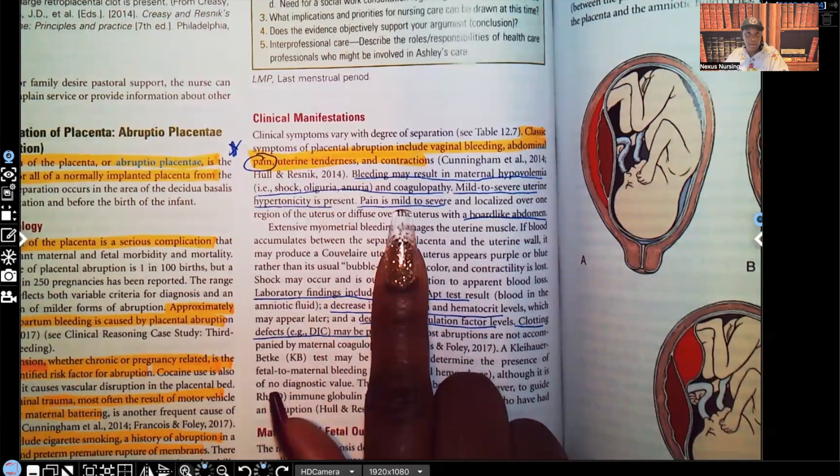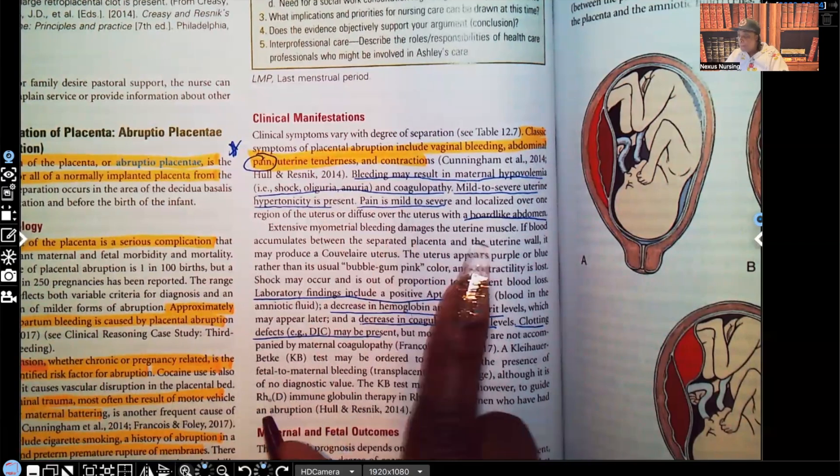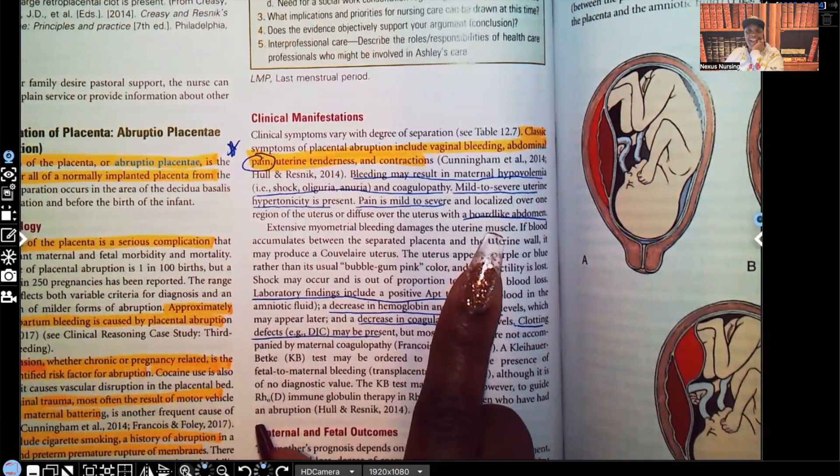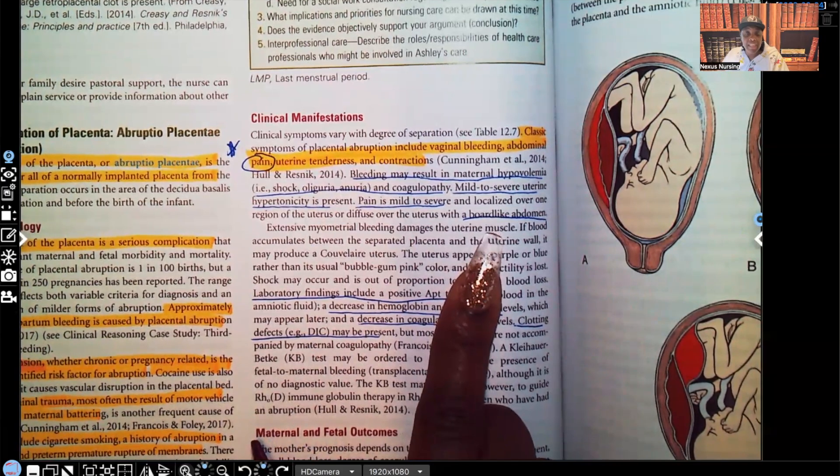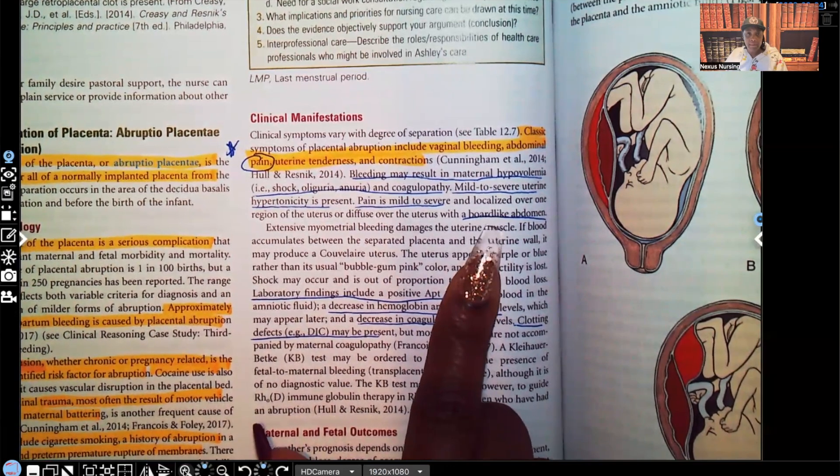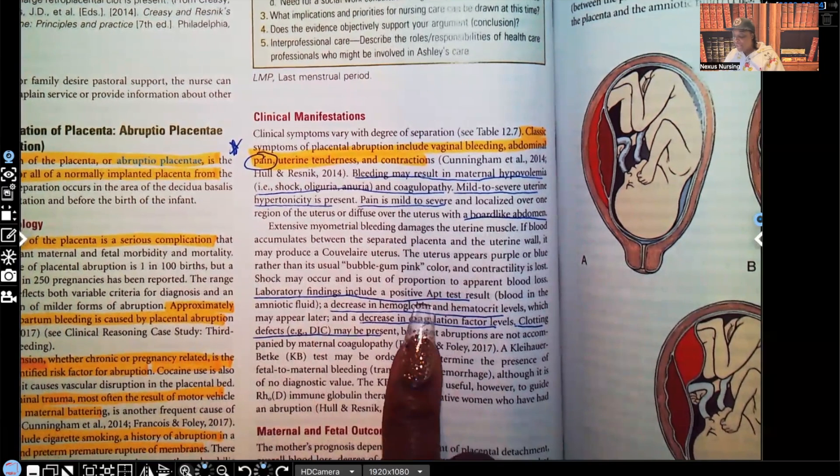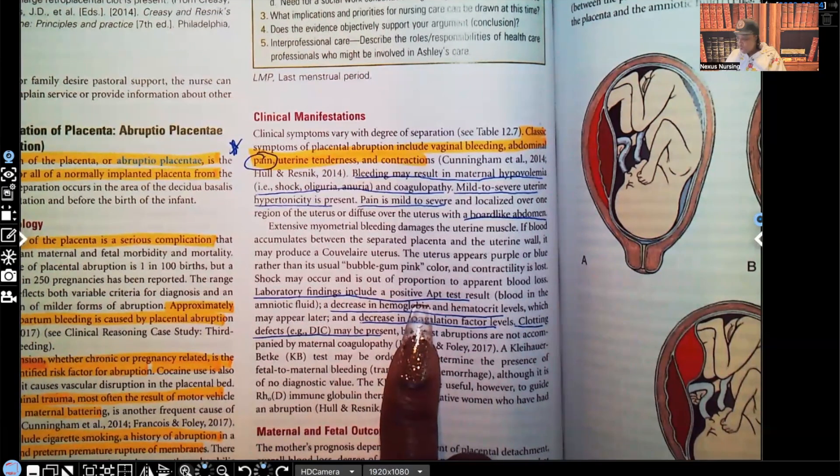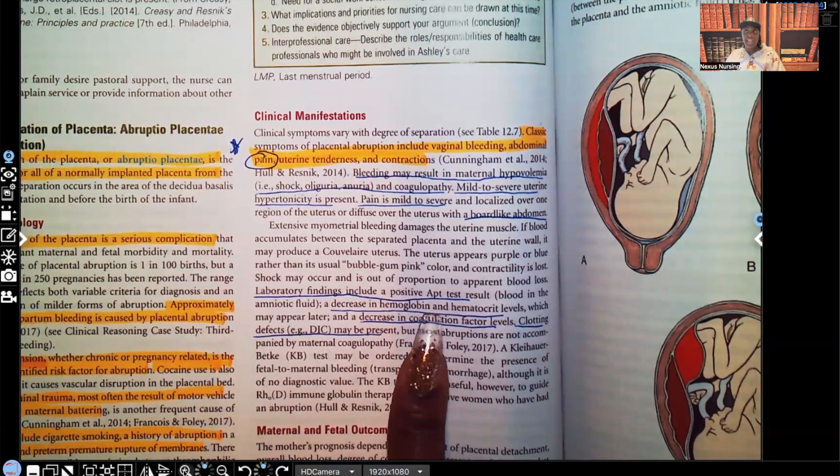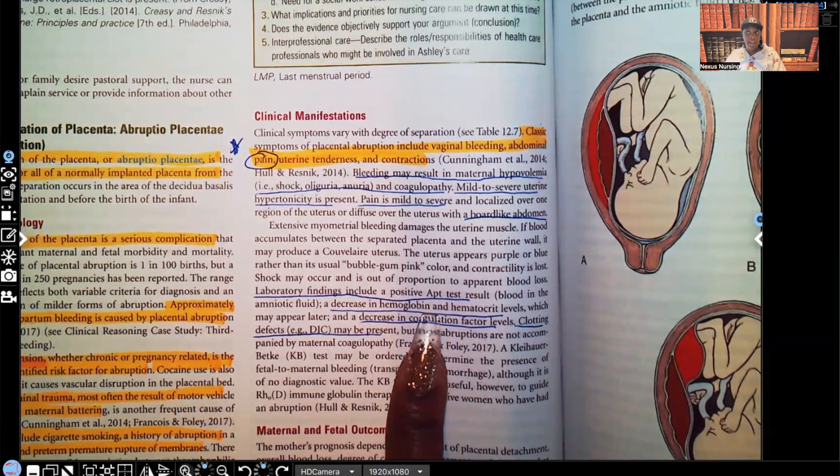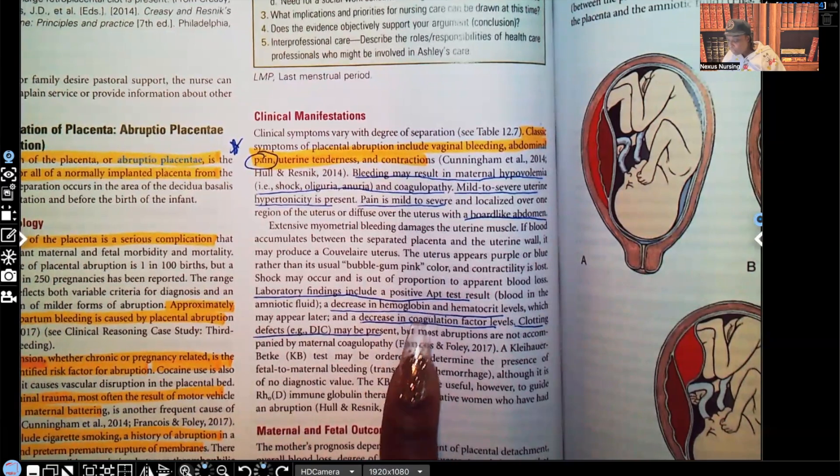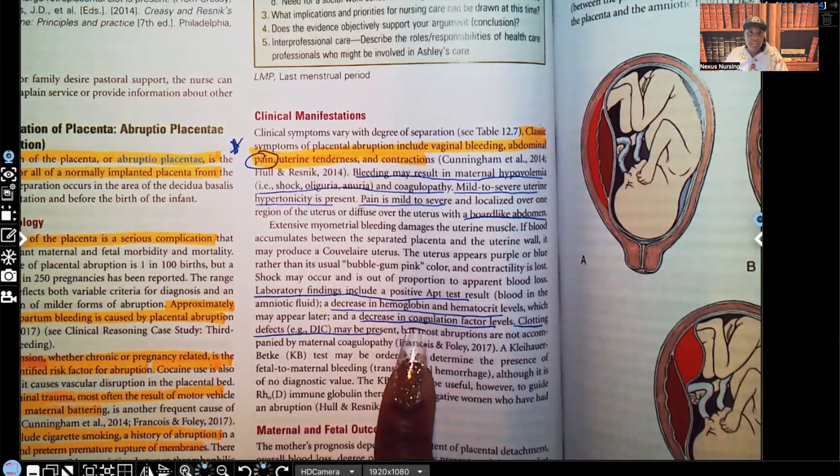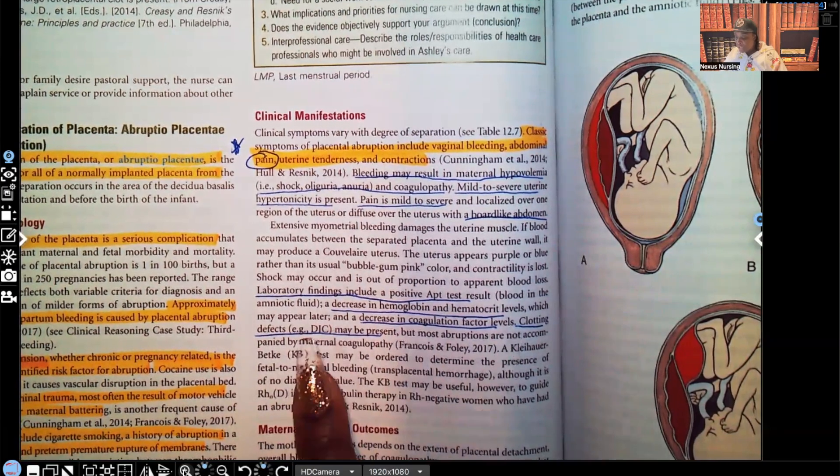Pain is mild to severe. It's going to be localized over the site, but there will be pain. Board-like abdomen. Think about it. Why do you think mom's abdomen is going to be board-like? All of the blood that's accumulating, that's what's causing that abdomen to be so hard and board-like. Lab findings, positive APT test, that's blood in the amniotic fluid. Decrease in hemoglobin and hematocrit, that H&H is going to start to go down because she's bleeding out. Decrease in coagulation factor levels. Clotting defects such as DIC may be present.